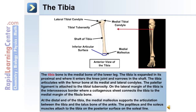The first bone of the lower leg we'll discuss is the tibia. Shown in this anterior view, the tibia has a medial and lateral condyle, as well as a tibial tuberosity. The shaft of the tibia leads to the inferior articular surface at the distal end. There is also a medial malleolus. The tibia is the medial bone of the lower leg and is expanded at its proximal end where it enters the knee joint, narrowing in the shaft. The tibia articulates with the femur at its medial and lateral condyles, and the patellar ligament is attached to the tibial tuberosity.